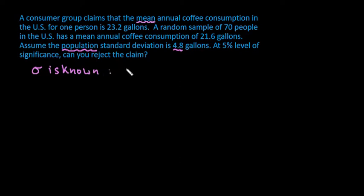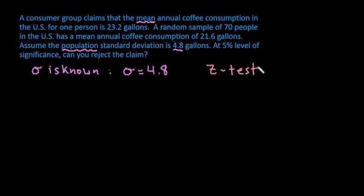We can say sigma is 4.8. Since sigma is known, this points to using the z-test for the mean, because it's based on the normal distribution rather than the t-distribution. If you know the population standard deviation, you use the z-test for the mean; otherwise you use the t-test for the mean.